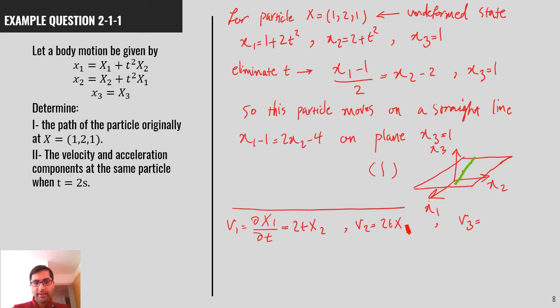And for V3, it's 0. So, A1, the acceleration along axis x1 is partial V1 partial t, which is 2 X2, A2 is 2 X1, and A3 is 0.